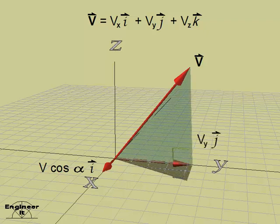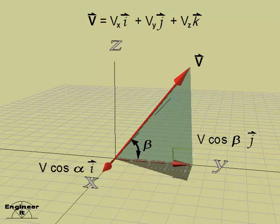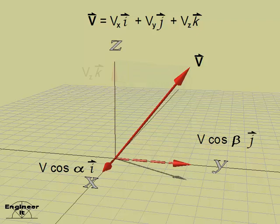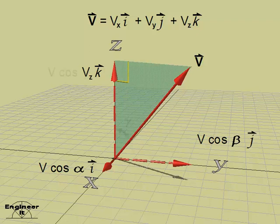Likewise, the y component of vector v may be calculated using the cosine of beta as the directional cosine of vector v. And the z component of vector v may be calculated using the cosine of gamma as the directional cosine of vector v.